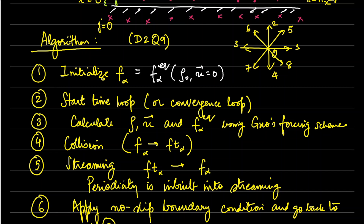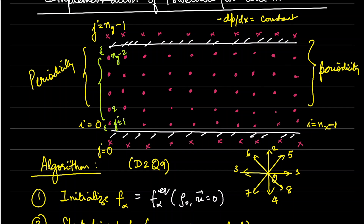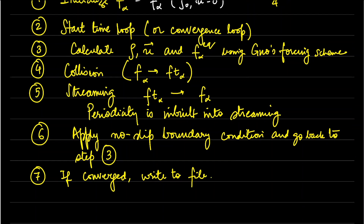These post-collision distributions are then streamed or propagated, so Ft_alpha values go to F_alpha at neighboring locations. The periodicity is built into the streaming step, meaning I do not write a separate function for enforcing periodicity. Instead, the same loop enforces the idea that distributions leaving the outlet are brought back into the inlet.